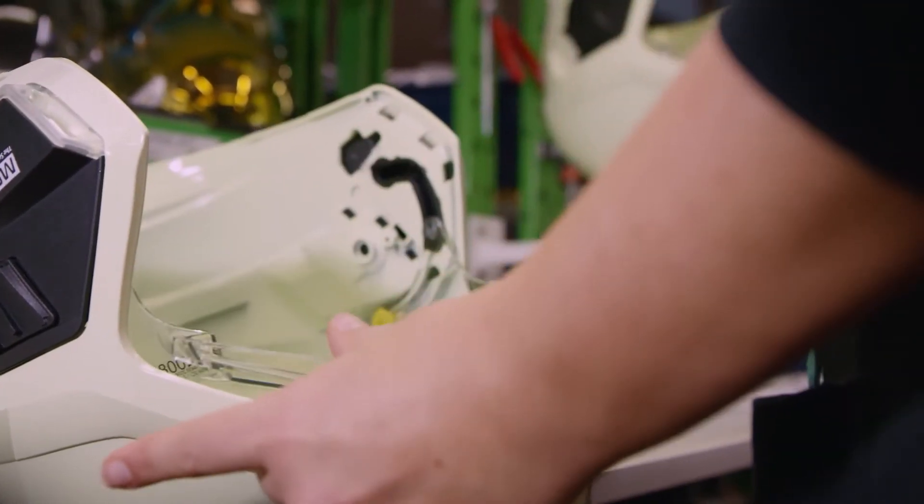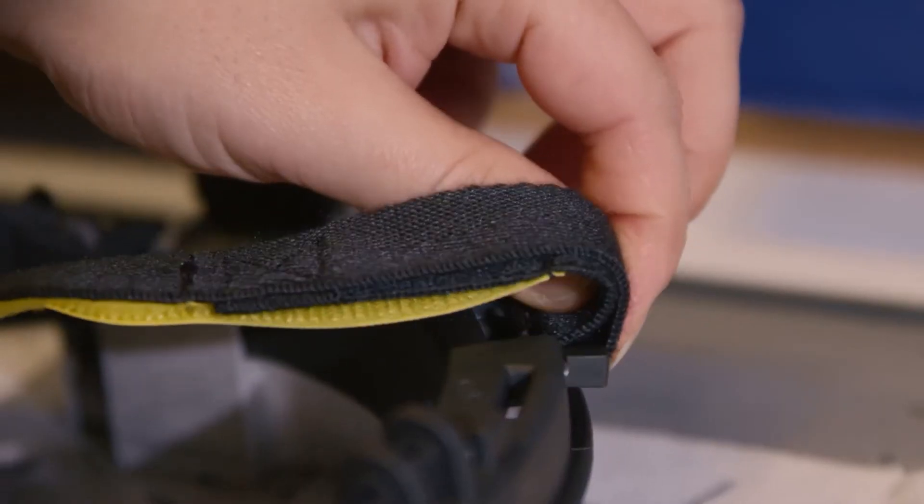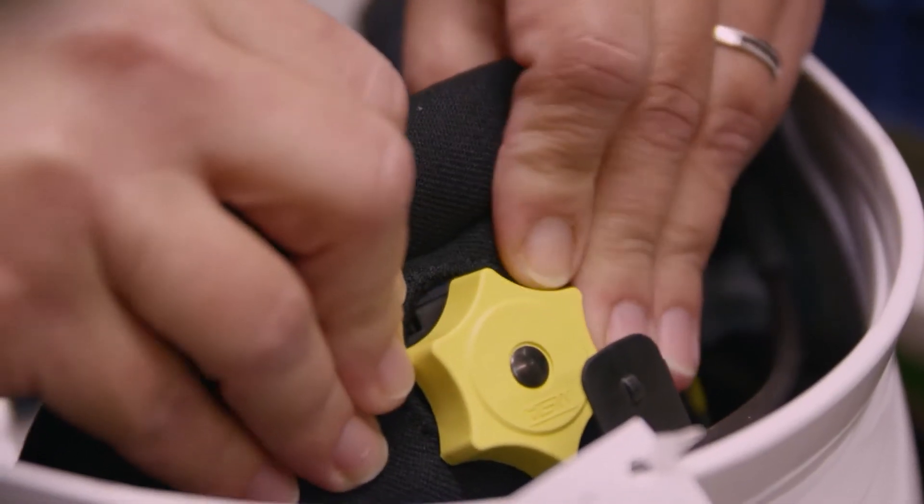From there, the face shield, then the impact liner, and the suspension, and then the soft goods and the ocular visor.